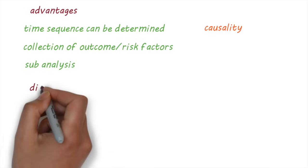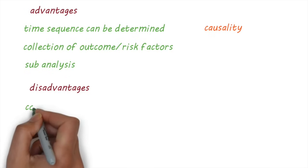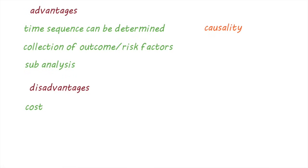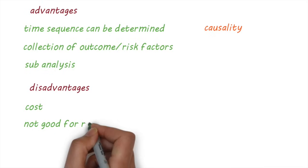A disadvantage of cohort studies is the high cost, as they can involve a large number of people being followed over a long period of time. They're generally not suitable to study rare diseases.